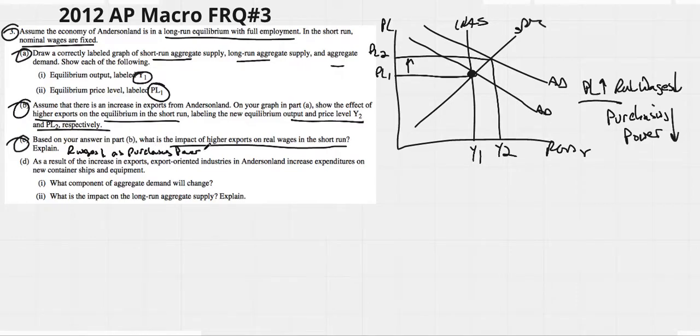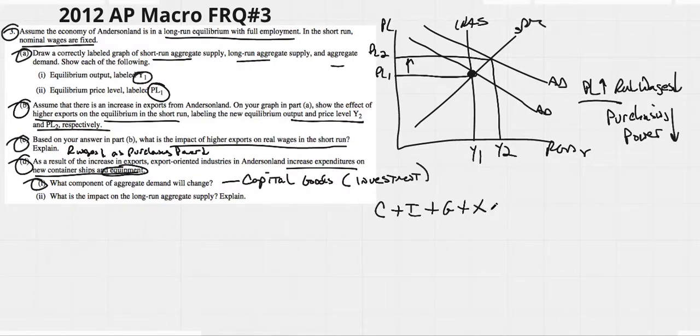As a result of the increase in exports, export-oriented industries in Anderson Land increase spending or expenditures on new container ships and equipment. What component of aggregate demand will change? Well, container ships and equipment are capital goods. Capital goods tend to be in the investment category, so I think investment here is your category that you want to choose.